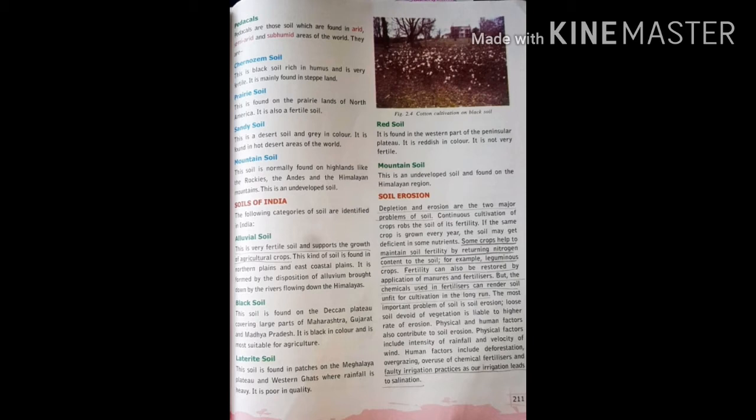The problem of soil getting degraded over time is known as soil erosion. Depletion and erosion are the two major problems of soil. Continuous cultivation robs the soil of its fertility, and if the same crop is grown every year, the soil may become deficient in some nutrients. Physical and human factors also contribute to soil erosion. Physical factors include intensity of rainfall and velocity of wind, whereas human factors include deforestation, overgrazing, overuse of chemical fertilizers and faulty irrigation practices, as improper irrigation leads to salinization.